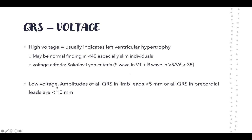Similarly, we can have low voltages, defined as amplitude less than 5 millimeters in limb leads or less than 10 millimeters in precordial leads. Low voltage can occur for a number of reasons — usually the signals are not reaching the leads appropriately. This could be due to higher BMI, where greater body habitus results in less signal being detected.